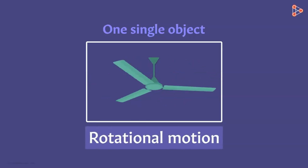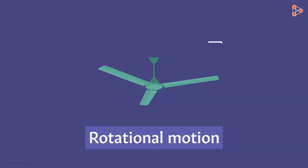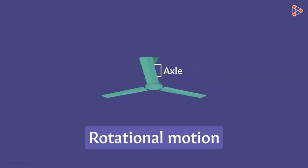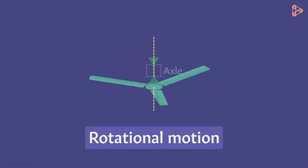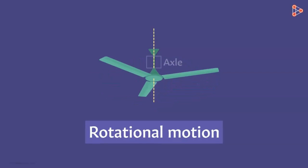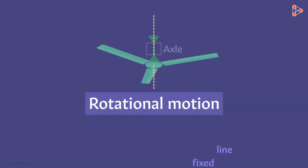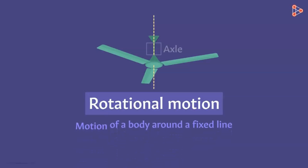Before defining rotational motion, let's try to understand it first. This rod here is called the axle, and the entire fan is spinning around this axle — or you can say spinning around this fixed line. This type of motion is what we call rotational motion. A body is said to be performing rotational motion if it is spinning around some fixed line, and that fixed line is also called the axis of rotation.